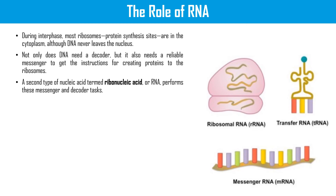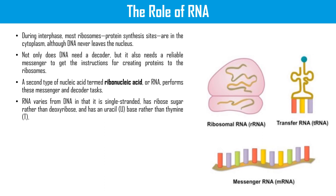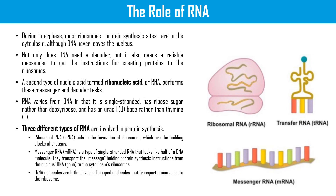RNA stands for ribonucleic acid. RNA differs from DNA in that it is single-stranded, has ribose sugar rather than deoxyribose, and has a uracil base rather than thymine. There are three different types of RNA: ribosomal RNA, messenger RNA, and transfer RNA. Ribosomal RNA aids in the formation of ribosomes, which are the building blocks of proteins. Messenger RNA is a type of single-stranded RNA that looks like half of a DNA molecule. It transports protein synthesis instructions from the nucleus — the DNA or gene — to the cytoplasm ribosomes.